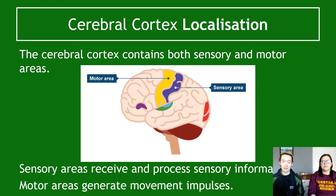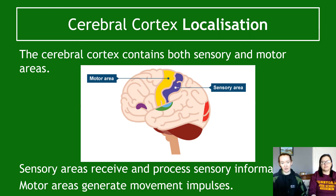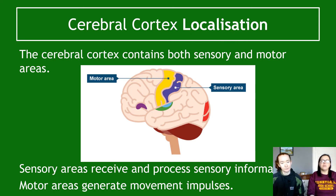The cerebral cortex contains both a sensory and a motor area, which you can see in this diagram here, but you don't need to know what way around it is from a picture. The sensory area receives and processes sensory information, and the motor area is the one that generates movement impulses. Like a car engine, the motor area is what makes you move — your motor neurons carry movement signals from the motor area of the brain.